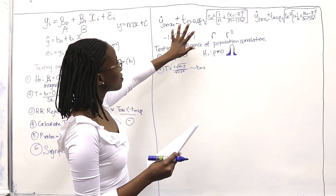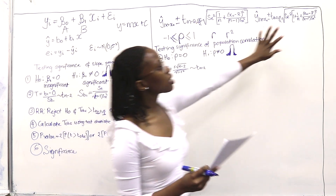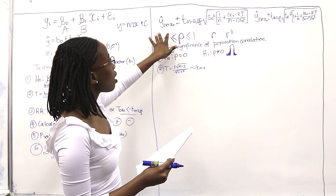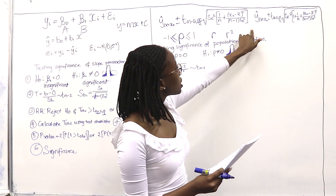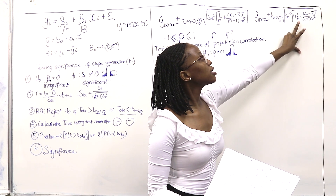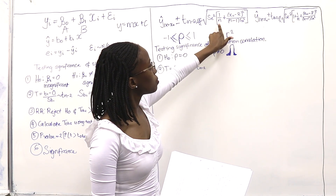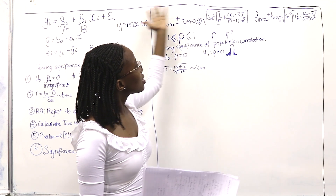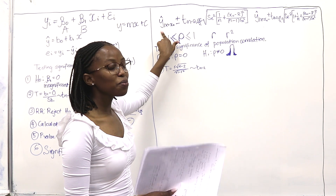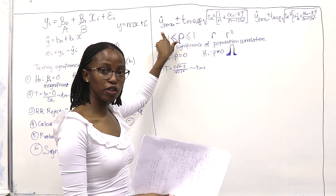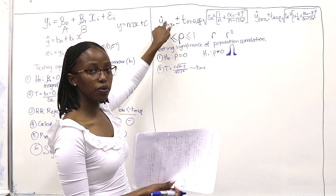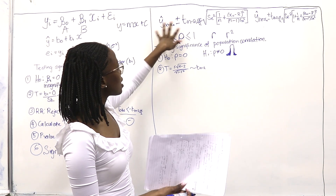Now we move on to the confidence interval and the prediction interval of the mean of Y. The confidence interval equation and the prediction interval are basically the same thing, except you add a 1 inside the formula for the prediction interval. If they ask for the prediction interval and give you X0, you use X0 to calculate the predicted Y, which is Y-hat.